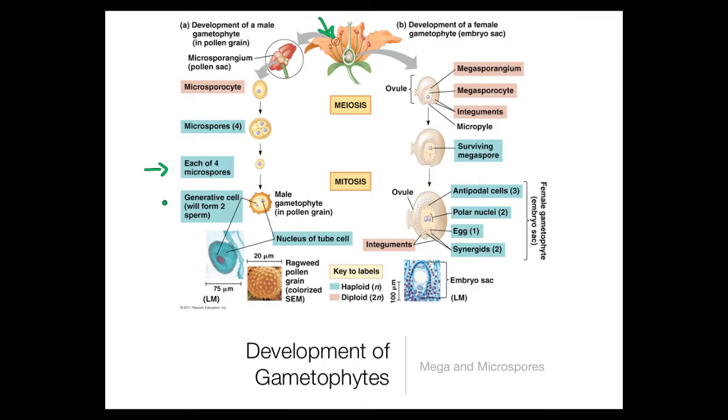For women it's a little more complicated. You form a megaspore inside the ovule, which is this central part of the plant right here, and this ovule is going to go through a bunch of different divisions. The first division which happens right here is going to give one surviving megaspore.